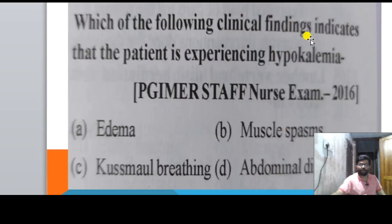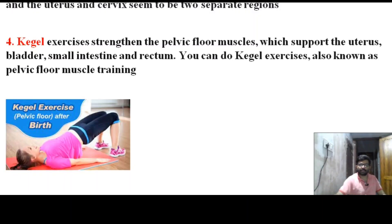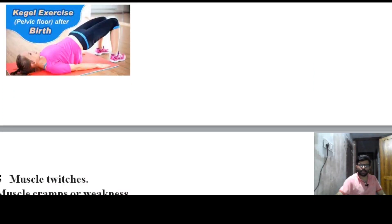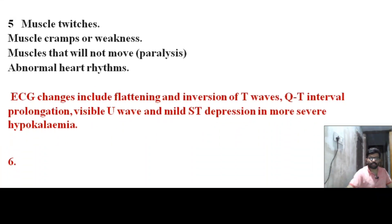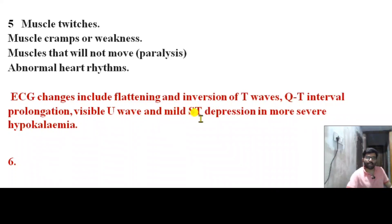Next question: which of the following clinical findings indicates that the patient is experiencing hypokalemia? Options: edema, muscle spasm, shallow breathing, abdominal distension. Correct answer: muscle spasm. Hypokalemia commonly presents with muscle cramps or weakness, paralysis, abnormal heart rate, and ECG changes including flattening and inversion of the T-wave, QT interval prolongation, visible U-wave, and mild ST depression.